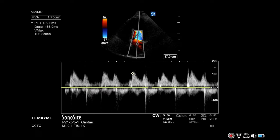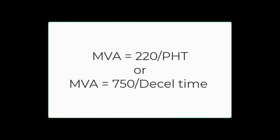Finally, with the value for either pressure halftime or deceleration time, you can calculate the mitral valve area. You can then decide based on the mitral valve area if the valve is mild, moderately, or severely stenotic.